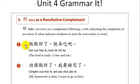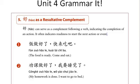My homework is done — 做好了, 我要睡觉了, I want to go to bed. 衣服我已经帮你买好了，明天晚会你就可以穿了 — I've already bought the dress for you; you can wear it for the party tomorrow night. And that concludes this grammar lesson.